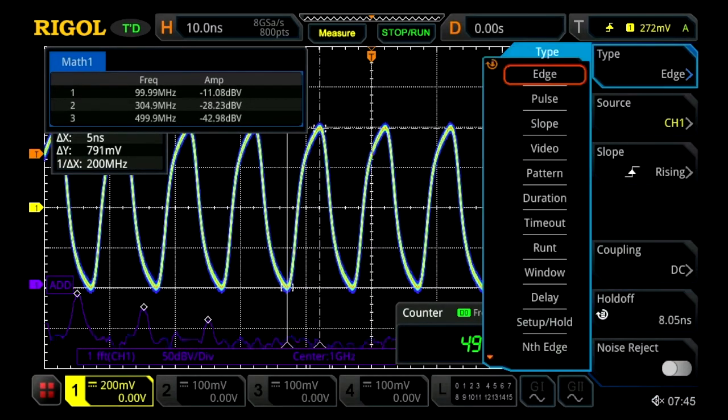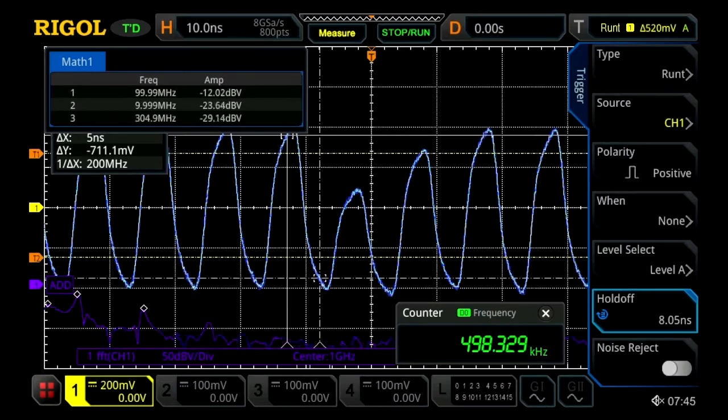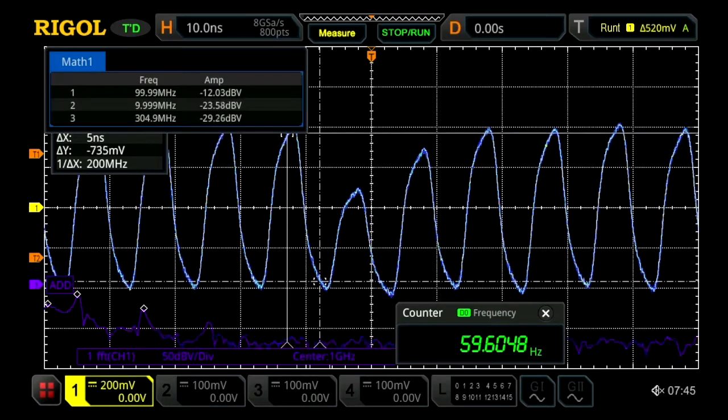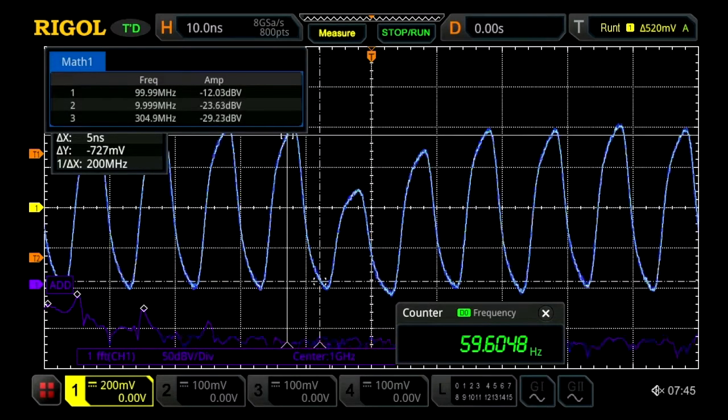As soon as we can see that, we can go ahead and switch over to a different trigger mode where we can capture it more cleanly. Here we can use the runt trigger and immediately find that single bad pulse that happens about 60 times a second.